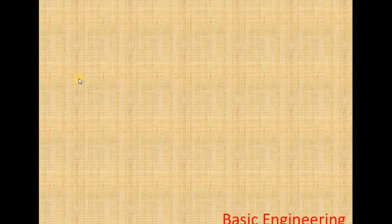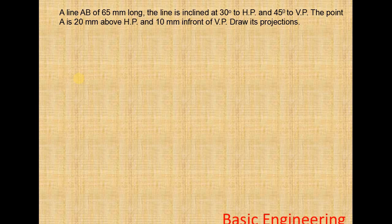Welcome to Basic Engineering. Today we will discuss a line inclined to both the planes. Line AB is 65mm long, inclined at 30 degrees to HP and 45 degrees to VP. Point A is 20mm above HP and 10mm in front of VP. We need to draw its projections.